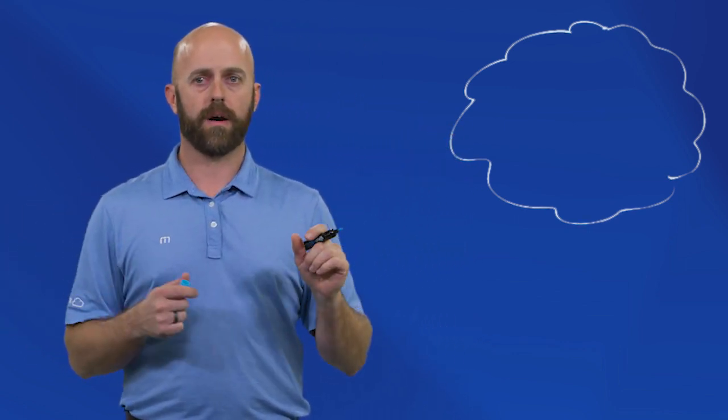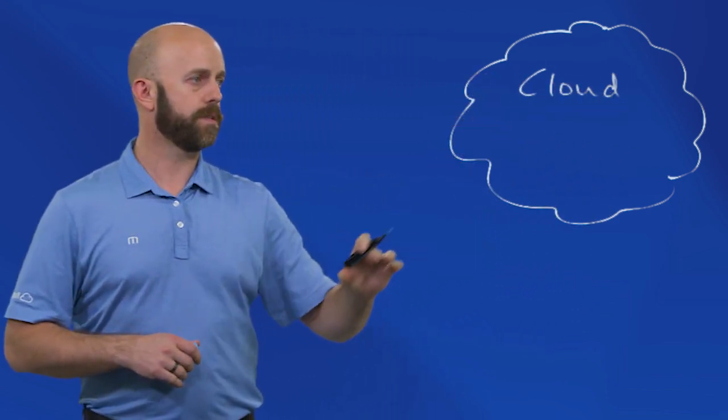So the first thing we'll do here is draw the cloud provider. The actual service that's in the cloud in this case isn't really the most important. It can impact how critical the connectivity is, but in this case we're going to be a little more generic. So this is going to be our cloud. We're hosting various services from here. It might be email, desktops, etc.